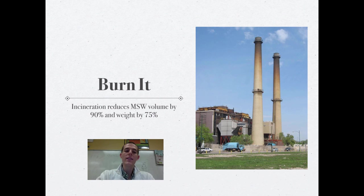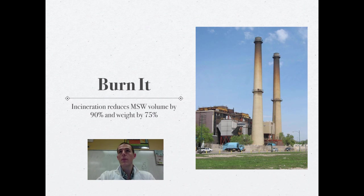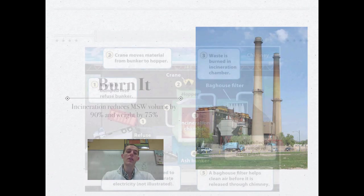Some people would argue for the incineration of waste — which is just burning the waste. A lot of waste burns really well because it's made mostly of hydrogen and carbon: paper, food waste, plastics, things like that. If you incinerate waste, it can reduce the volume by 90% and the weight by 75%. In a world increasingly short on space and rich in trash, the idea of reducing waste by 90% seems like a really good idea.